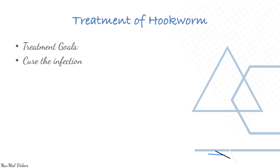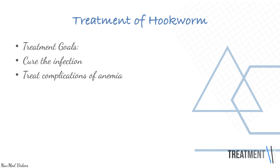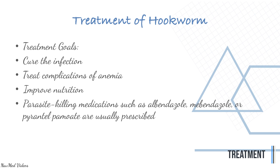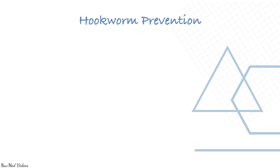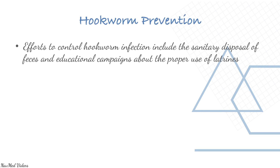Treatment: cure the infection and treat complications of anemia, and improve nutrition. Parasite-killing medications such as albendazole, mebendazole, or pyrantel are usually prescribed. Increase the protein in the diet to reduce complications of anemia.